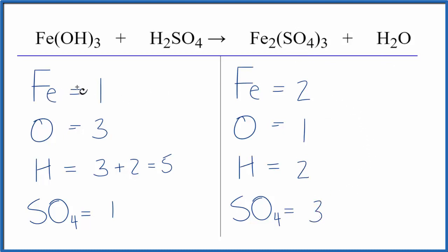Why don't we just start right off and balance the iron atoms? So if we put a two here, one times two, that would give us two iron atoms. Those are balanced.